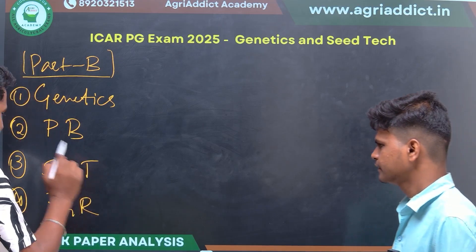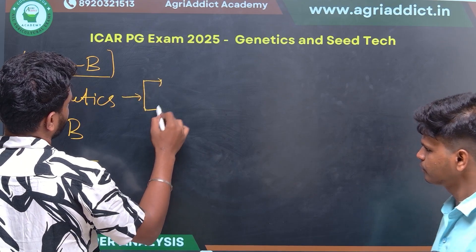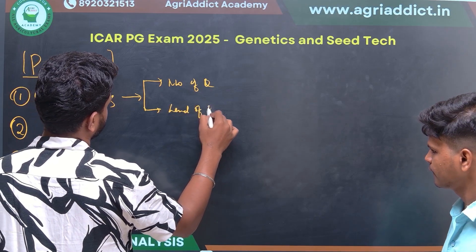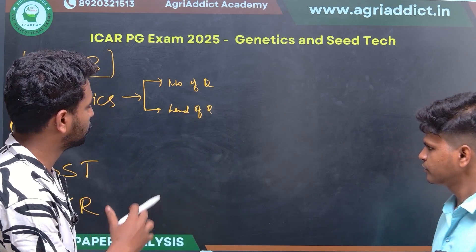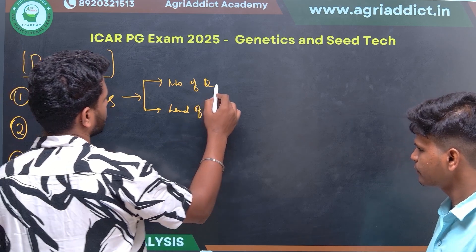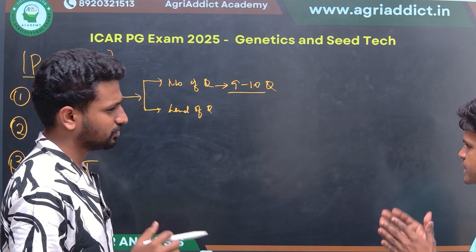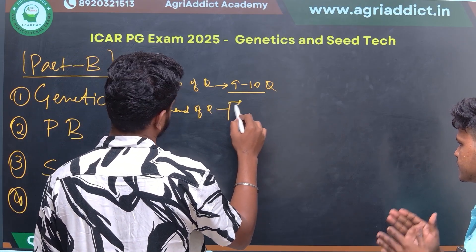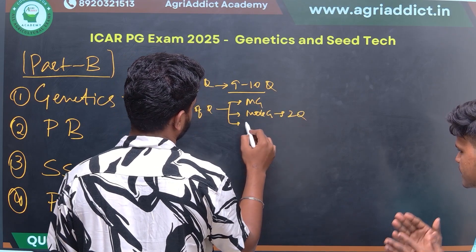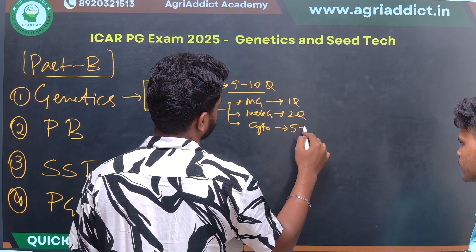Let's start with Genetics — discussing number of questions and level of questions. Overall, approximately 9 to 10 questions came from the Genetics part. Breaking it down: from Molecular Genetics there were around 2 questions, from Mendelian Genetics only 1 question, and from Cytogenetics nearly 5 to 6 questions.